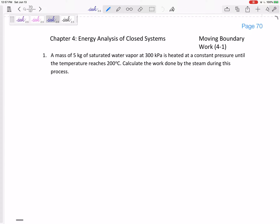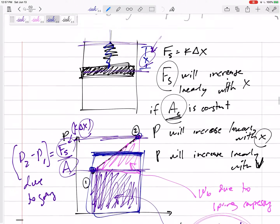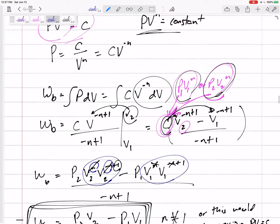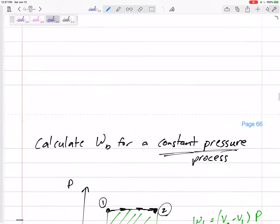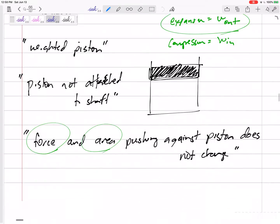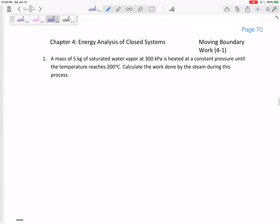Let's use those boundary work equations that we derived. We have equations for a spring, polytropic process, isothermal expansion of ideal gas, constant pressure process, and obviously for constant volume process the boundary work would be zero. Let's look at this one.